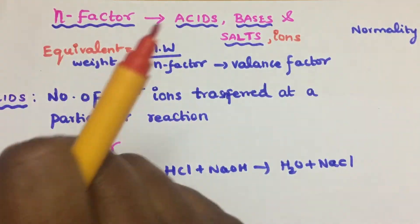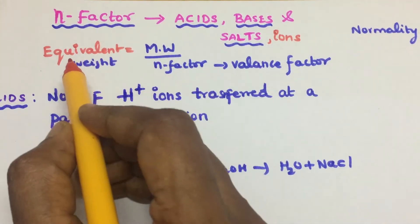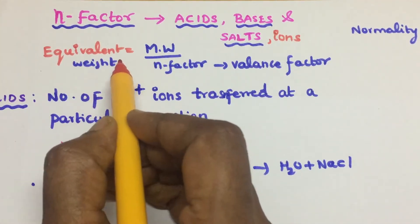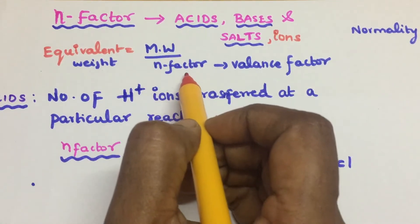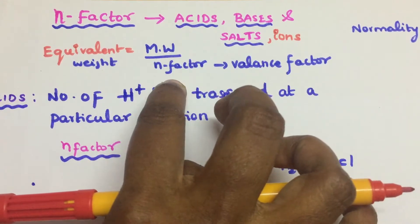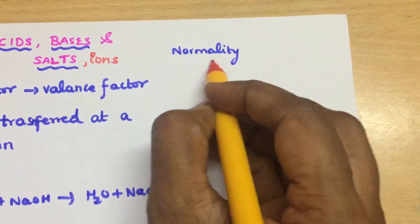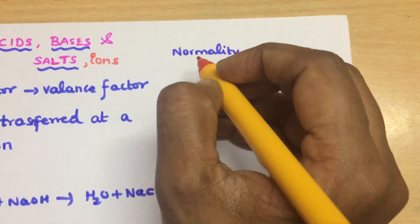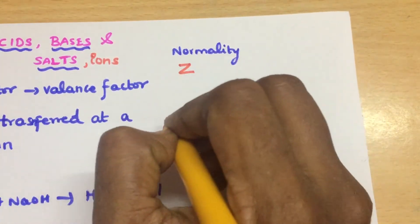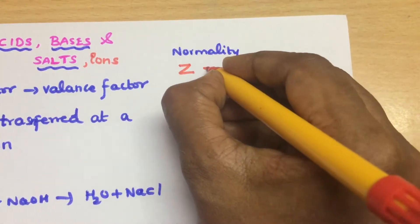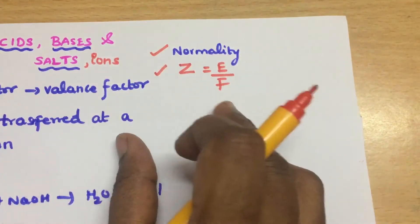So, why study N-factor? Another term we use for N-factor is 'balance factor.' You may know equivalent weight — the equivalent weight of any substance is equal to the molecular weight divided by its N-factor. Without knowing N-factor, you cannot find equivalent weight. Equivalent weight is used for finding normality and for Faraday's first and second law. Electrochemical equivalent is equivalent weight divided by Faraday.